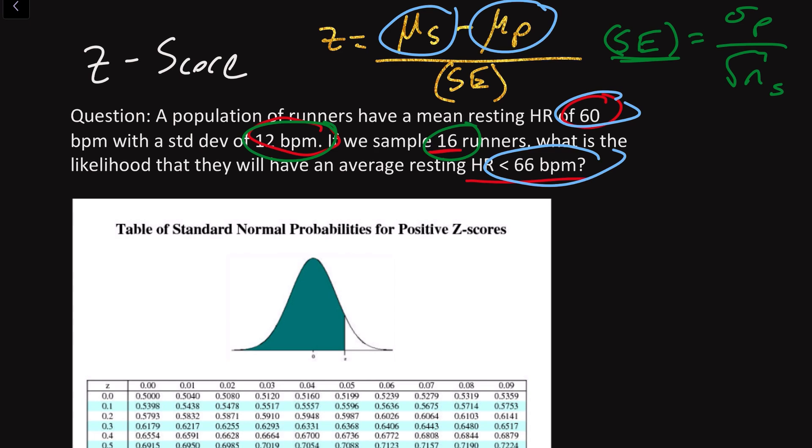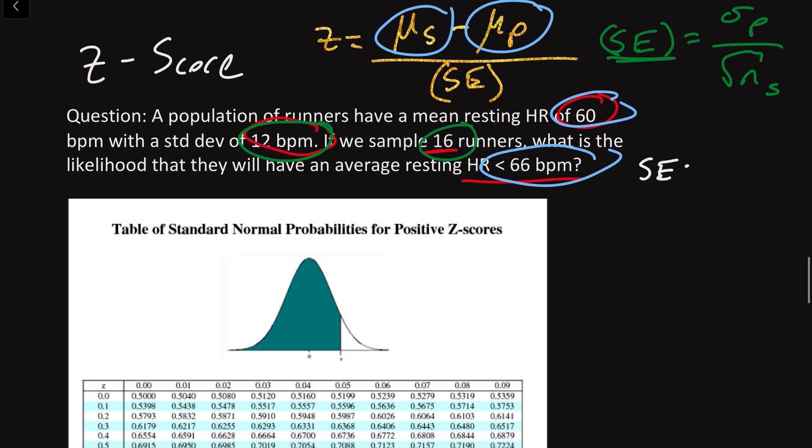We're going to first calculate what standard error is. Standard error will be equal to that standard deviation of our population, which we were told was 12. We're going to divide this by the square root of our sample size, which was 16. 12 over square root of 16 is equal to 12 over 4, which is equal to 3. So we know that our standard error is 3.